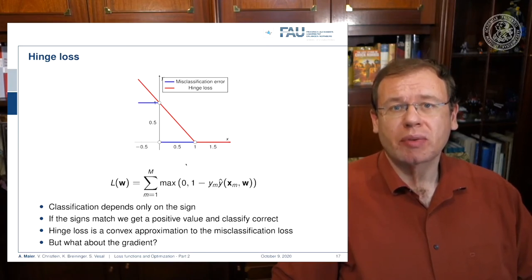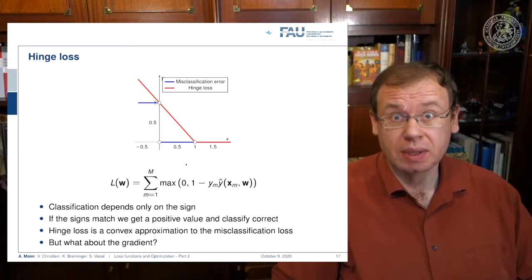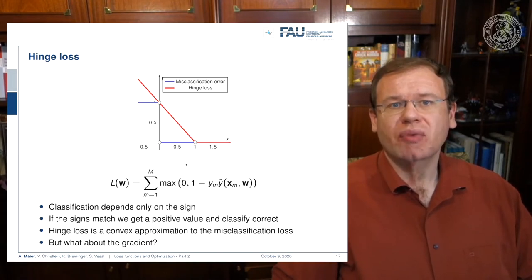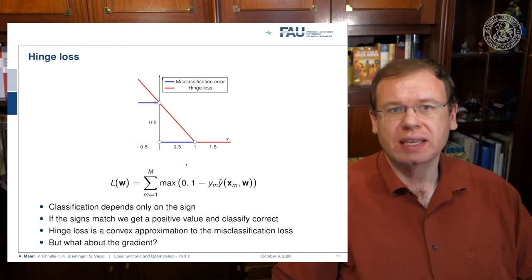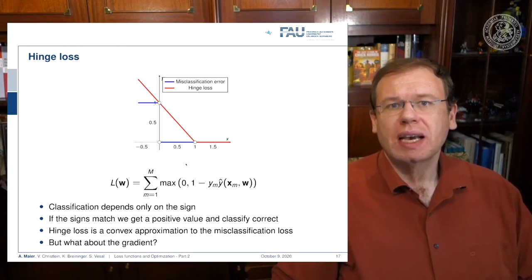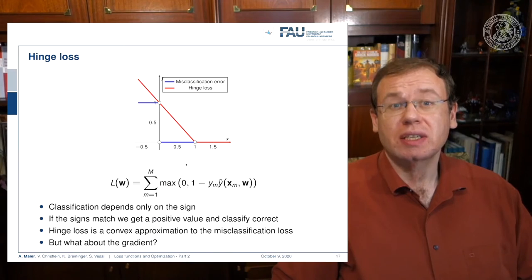We got rid of the problem of having to find the set of misclassifications capital M. Now we can take the full set of samples by using this max function, because everything that will fulfill this constraint will automatically be clamped to zero, so it will not influence this loss function.